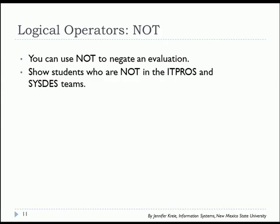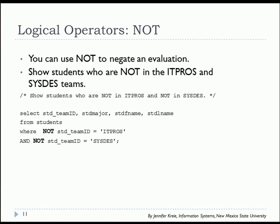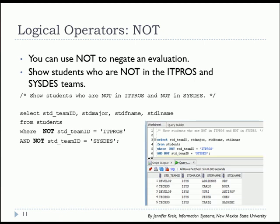The third operator is NOT, and you can use NOT to negate an evaluation — for example, students not in IT pros. We're going to show students who are not in IT pros and not in system designers. This would be our output, and we can verify that by looking at the team ID.